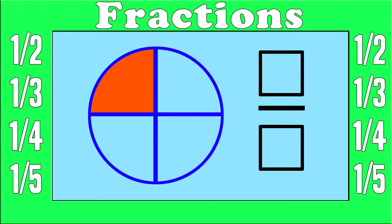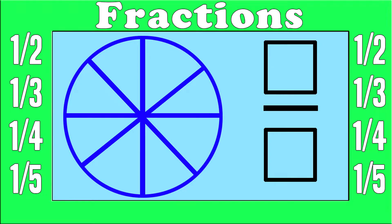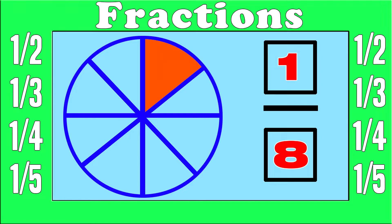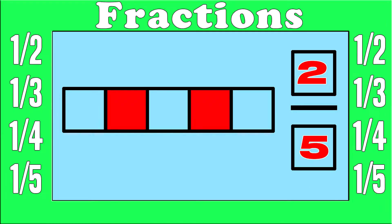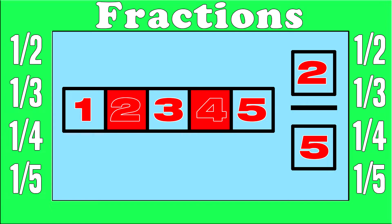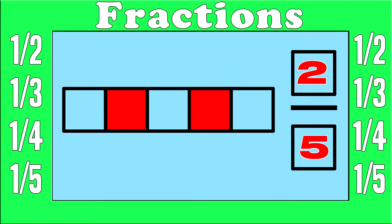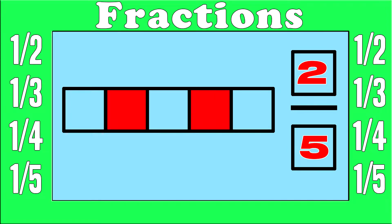Here is one-fourth — you can see that one-fourth of the circle is colored. Now let's take a look at this next circle. There are eight different parts: one, two, three, four, five, six, seven, eight. How many are colored? There is one-eighth colored. The one on top is the total number of parts that are colored, and the eight on the bottom is the total number of parts. Now let's take a look at this rectangle. We have five total parts, and how many are colored? There are two red parts that are colored — so we have two out of five: two-fifths. That is a fraction.